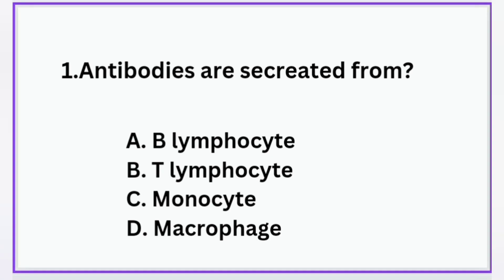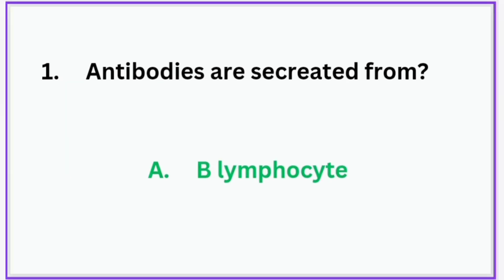Antibodies are secreted from: Option A: B lymphocyte, Option B: T lymphocyte, Option C: Monocyte, Option D: Macrophage. The correct answer is Option A — B lymphocyte. Antibodies are secreted from B lymphocyte.